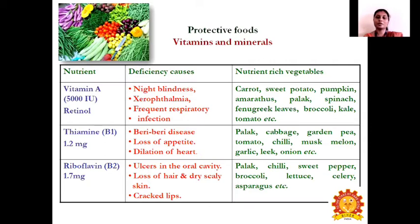Vitamin B1, otherwise called thiamine, is found in vegetables containing about 0.1 to 0.2 mg, including garlic, cabbage, garden greens, tomato, chili, musk melon, leek, and onion. Deficiency of vitamin B1 leads to beriberi, loss of appetite, and dilation of the heart.